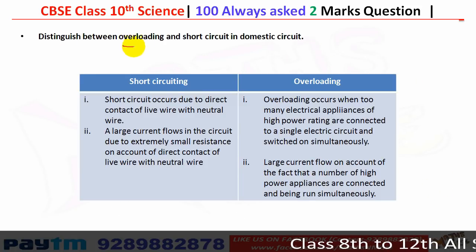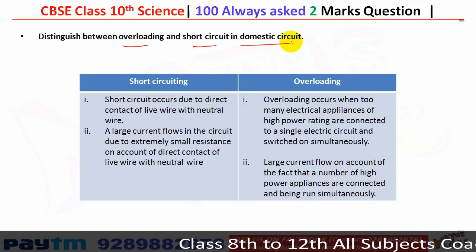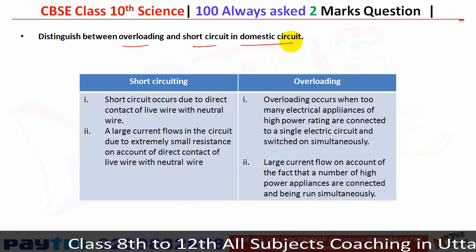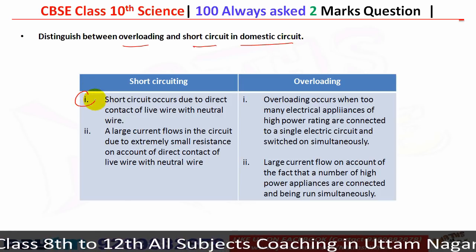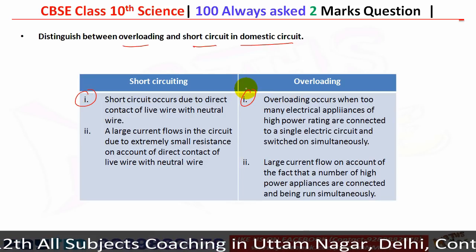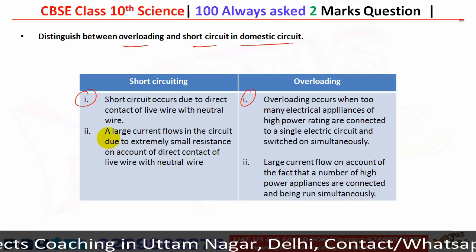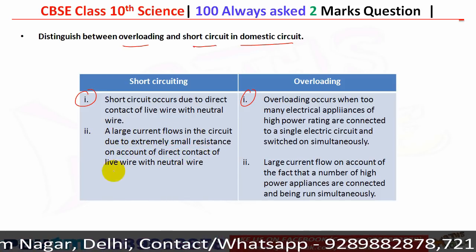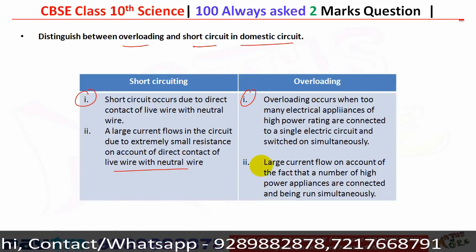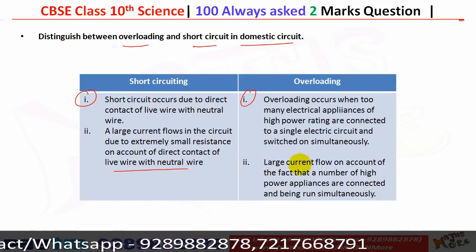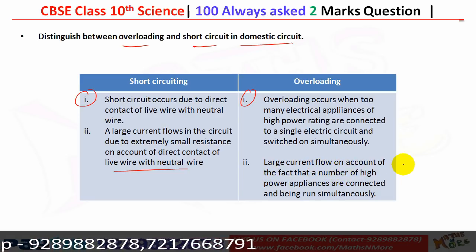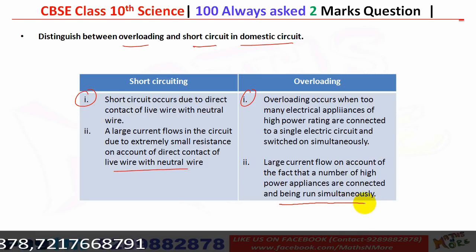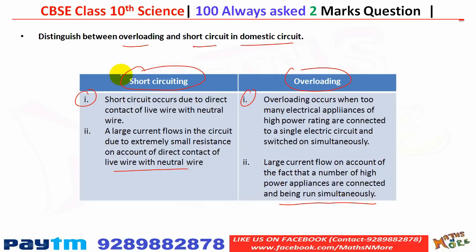Distinguishing overloading from short circuiting: short circuiting happens when the live wire and the neutral wire come in direct contact, causing a large current to flow due to extremely small resistance. Overloading happens when too many appliances are connected to one socket simultaneously, causing a large current to flow on account of the many power devices being run at the same time.